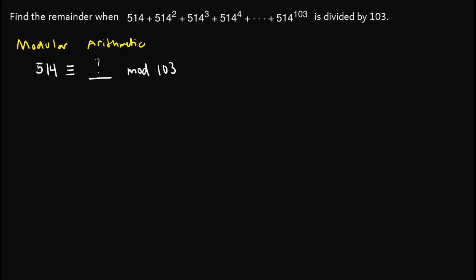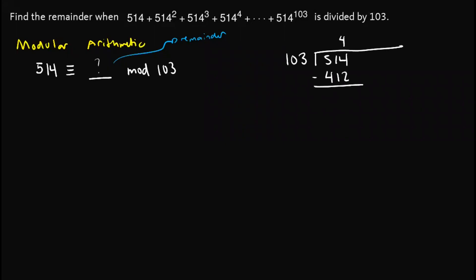Basically, what's in here is the remainder when we divide 514 by 103. Let's do that. So we have 103 into 514 — this is actually 4, which gives us 412. Subtracting that gives us 102. So we know that the remainder is 102.